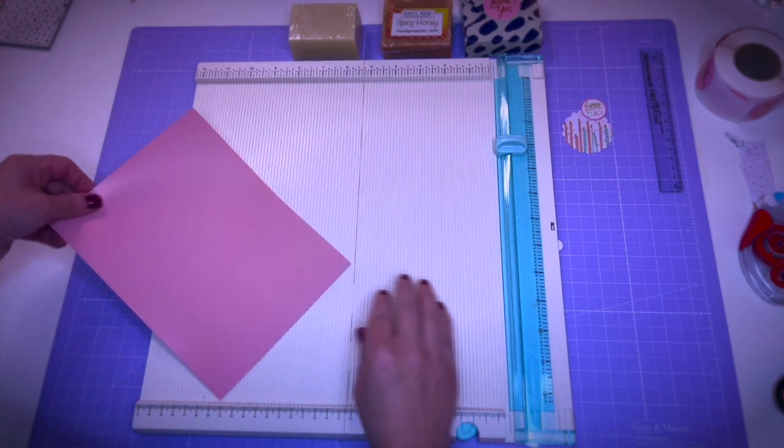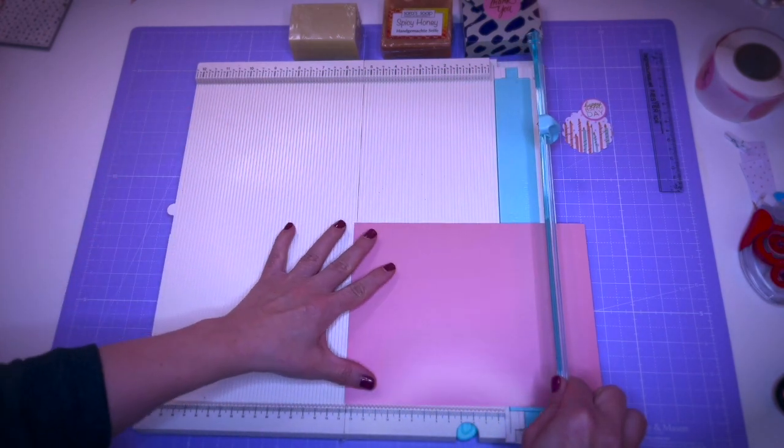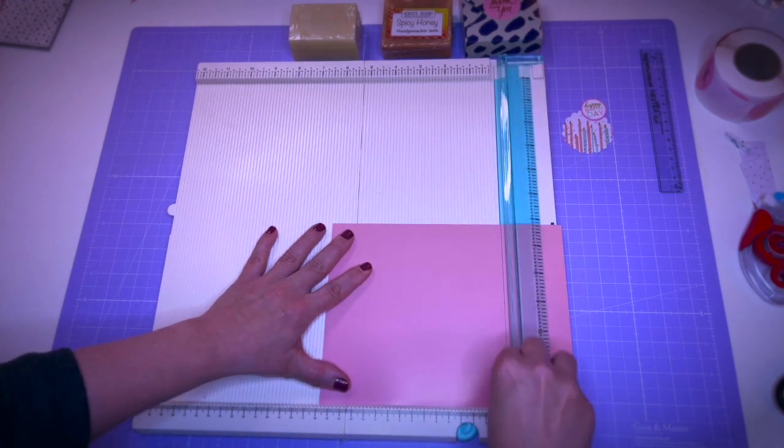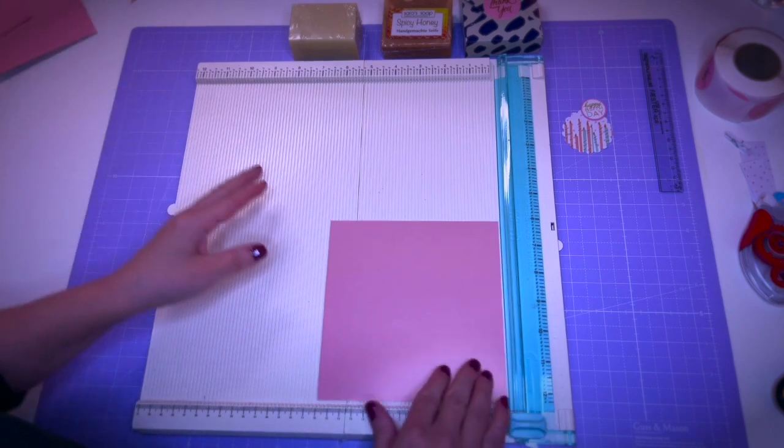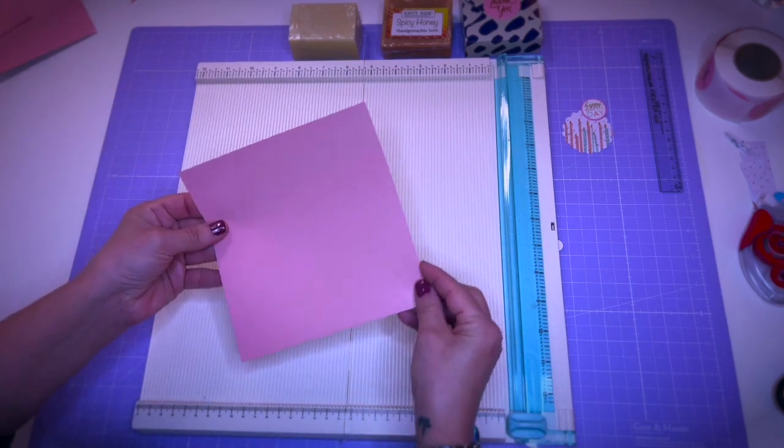I use the trim and scoreboard that comes from We Are Memory Keepers as well. It has markings for length and it's very easy to use. I will of course leave all the links down in the description for you to check out if you are interested.